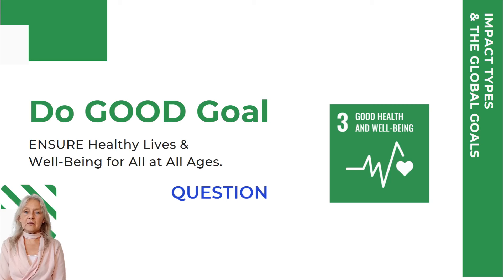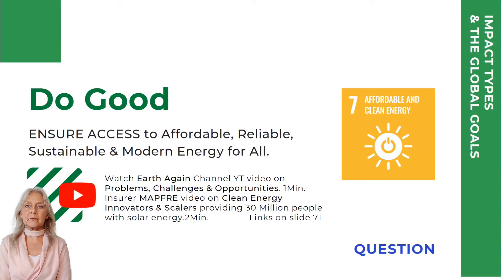Question: can you distinguish the impact types in the prevention policies over time? Hints: maximum numbers for gatherings, curfews. Indicators for Global Goal 7 are the part of the population with access to electricity, and with primary reliance on clean fuels and technology. Earth Again made a video short explaining Global Goal 7's problems, challenges, and opportunities, giving tips on what you can do to help stop or lower energy use and the use of human-powered transport. Ensure Mofre's video voices the importance of access to clean energy, showing two great innovators providing 30 million people with access to solar light. Question: do you think that these personal tips can be turned into an impact innovation — one you can market with a healthy business model, not dependent on grants and subsidies, but on revenues and investors?